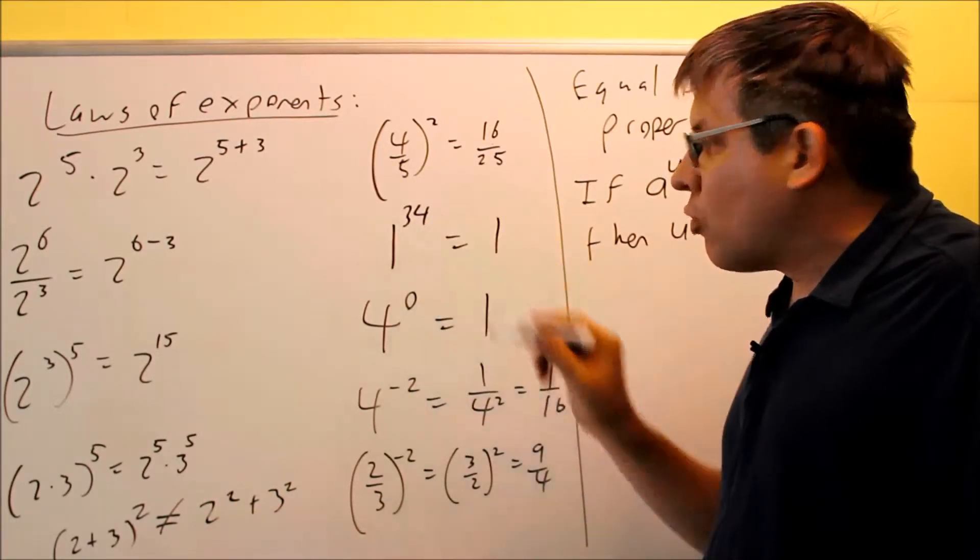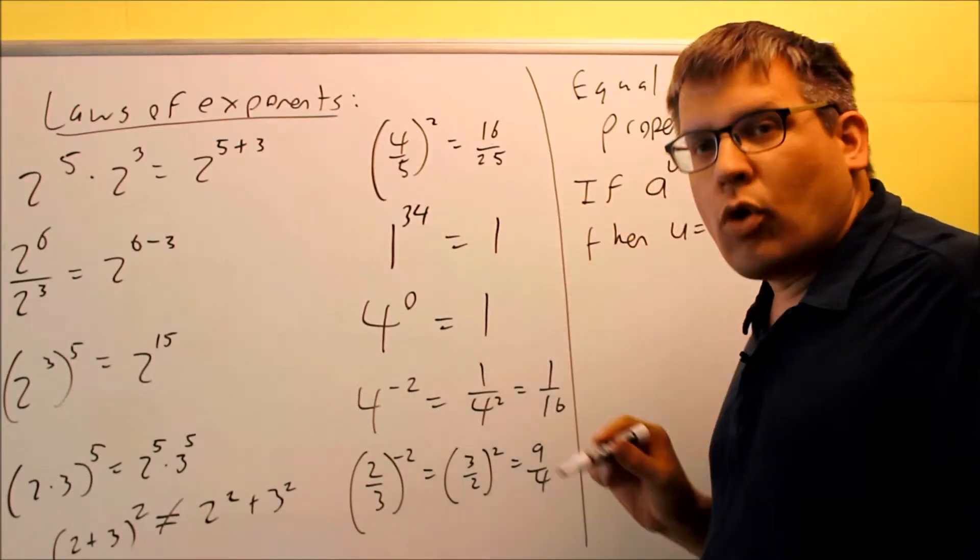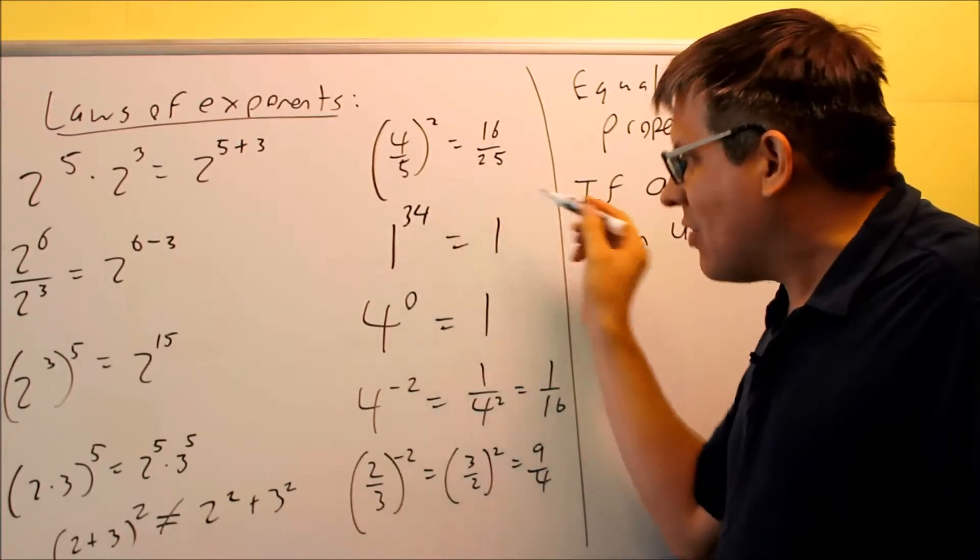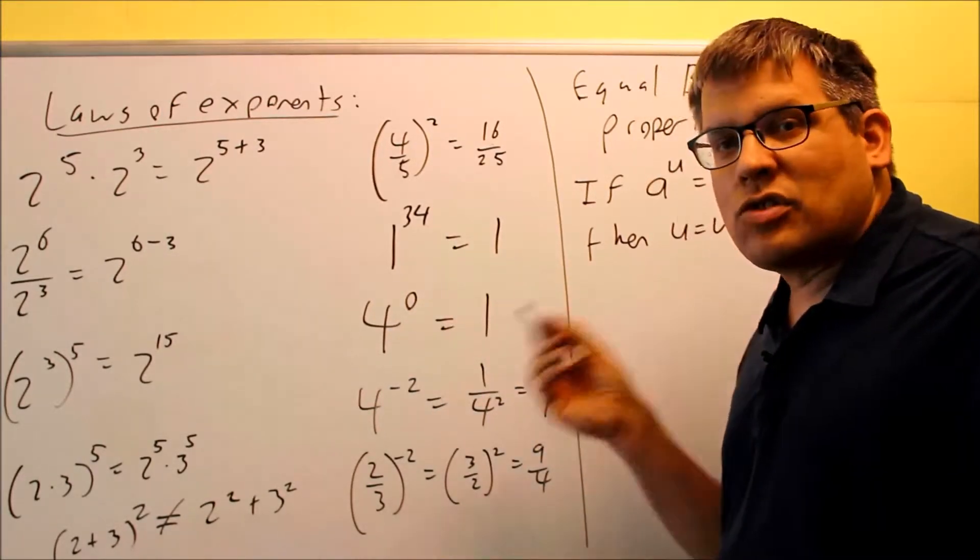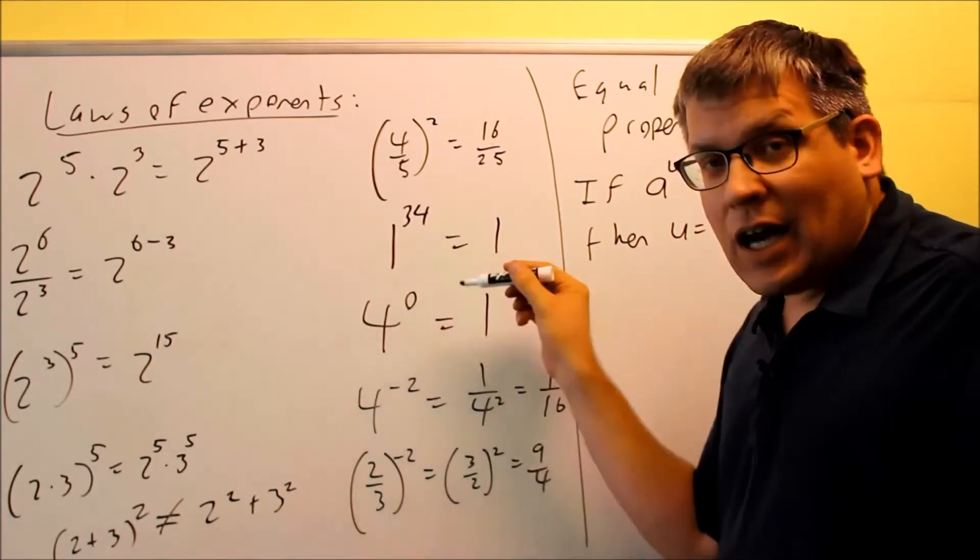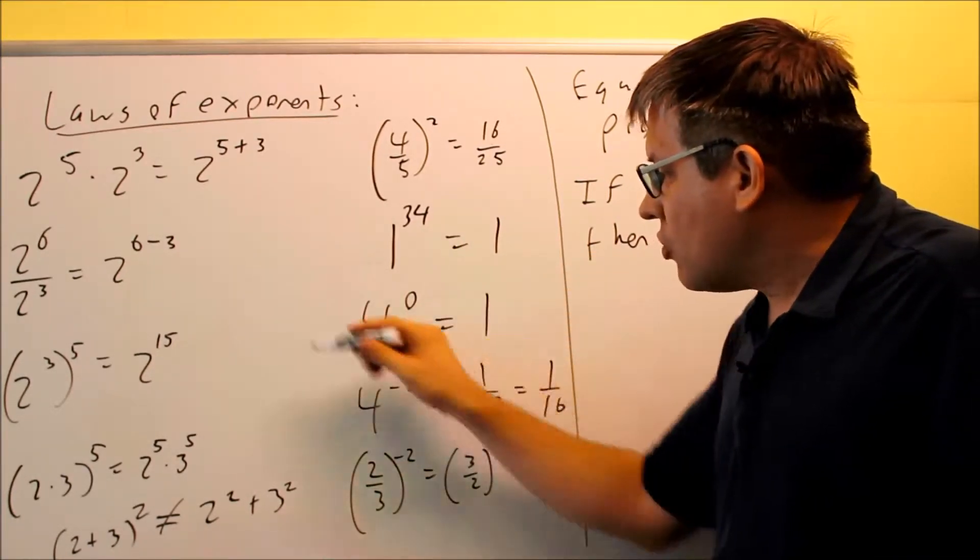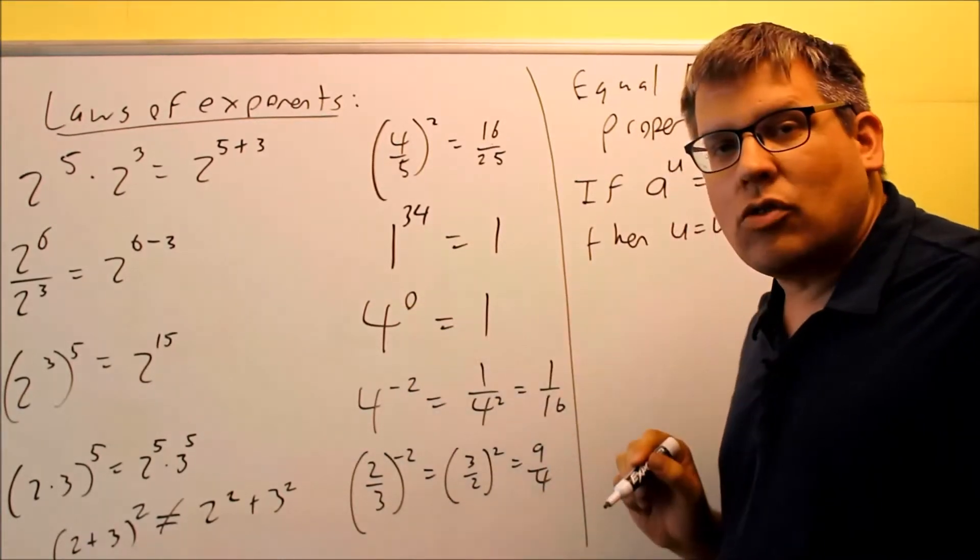Next, any time you have 1 raised to any number, you're always going to get 1 for a result. So 1 to anything is going to give you 1. If you have any number raised to a power of 0, you always will get 1 for the answer there. It doesn't matter what you put in here. You can have pi to the 0, or 2,000 to the 0. It doesn't matter. Even decimals to the 0, that's still going to give you 1.